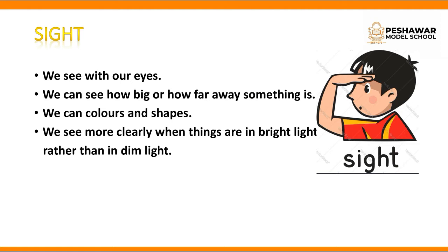Sight means vision (نظر). We see objects with our eyes and feel them. If something is near or far, we can tell through our eyes. We see with our eyes. We can see how big or how far away something is. We can see colors and shapes with our eyes.